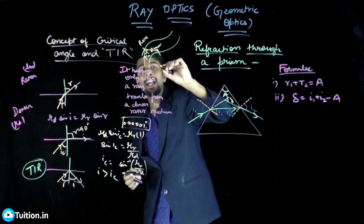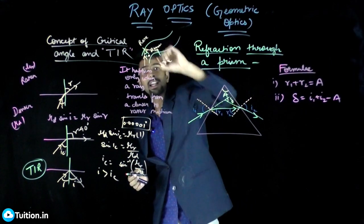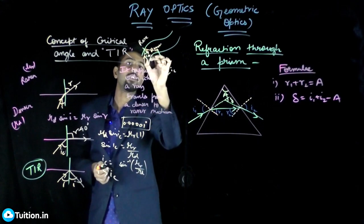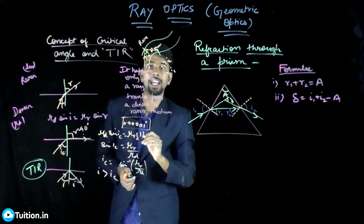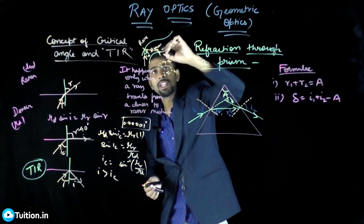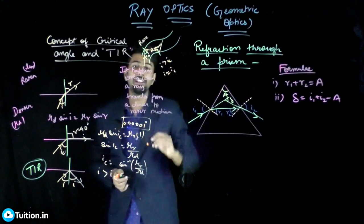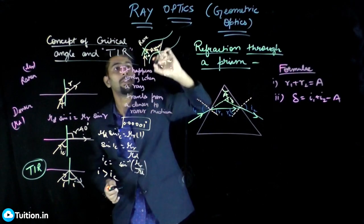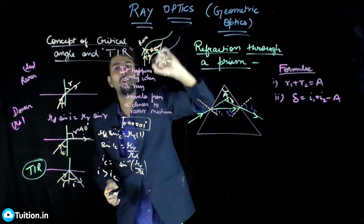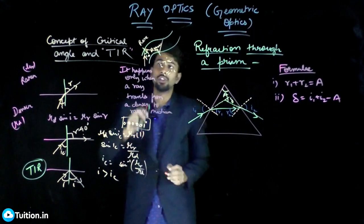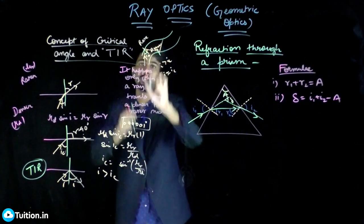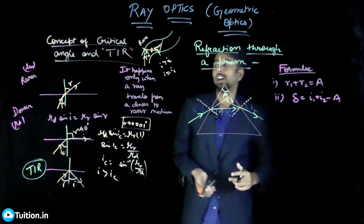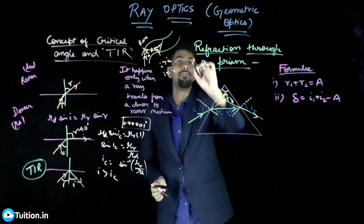Since the two normals at successive surfaces are parallel, if the ray is incident at i slightly greater than ic, it reflects with the same angle and hits the next surface at the same angle i — which is again greater than ic. So the ray undergoes total internal reflection again, and the signal keeps traveling inside without any loss. This is how total internal reflection is used in optical fiber transmission.